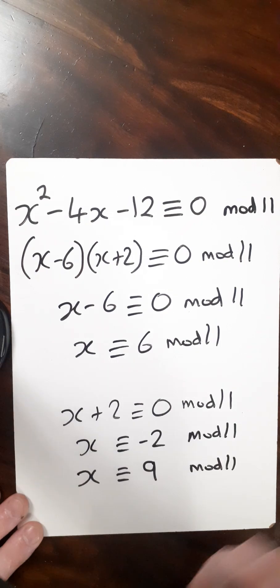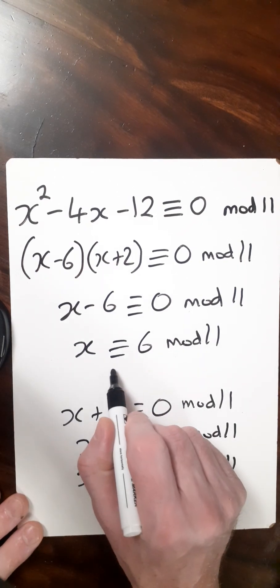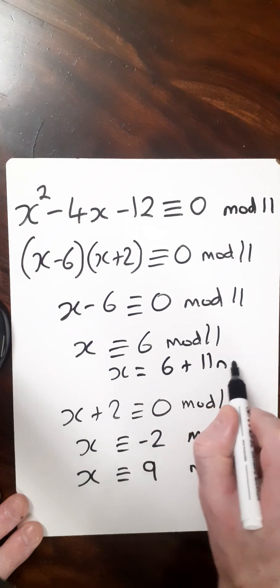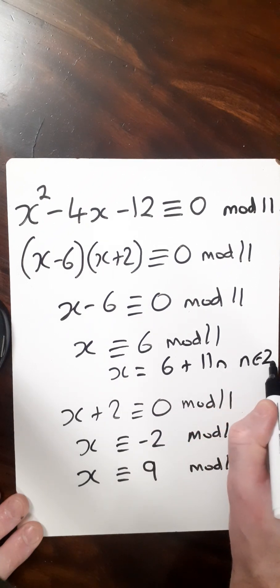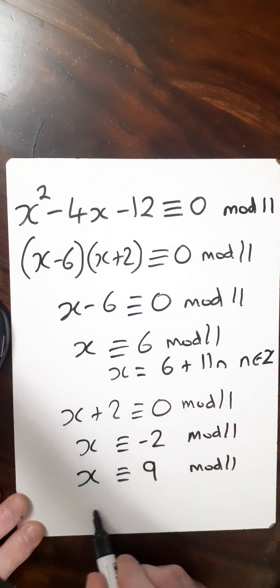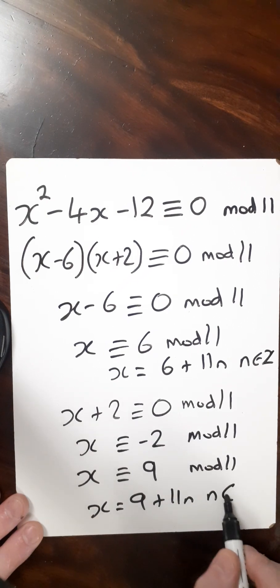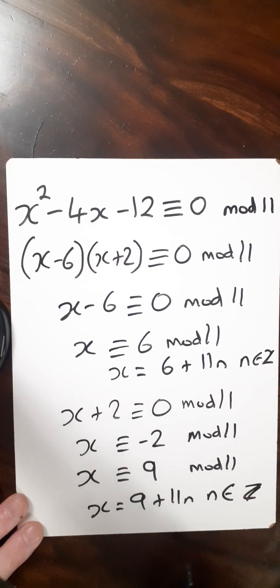With this equation, there are infinite solutions. So we can say x = 6 + 11n where n is an integer, and x = 9 + 11n where n is also an integer.